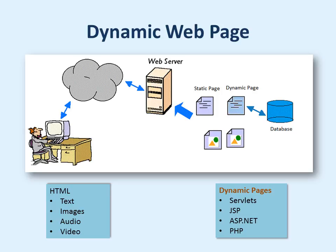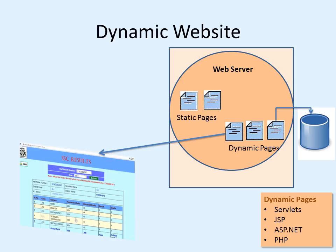As an example of a dynamic website or dynamic web pages, here is the web server, and the website may have some static pages as well as some dynamic pages. Usually dynamic pages access a database. The pages are developed using HTML which contains text, images, audios, and videos. But dynamic pages are developed using technologies like Servlets, JSP, ASP.NET, and PHP. Here is an example showing some static and some dynamic pages along with a database, and the pages are displayed inside the browser.